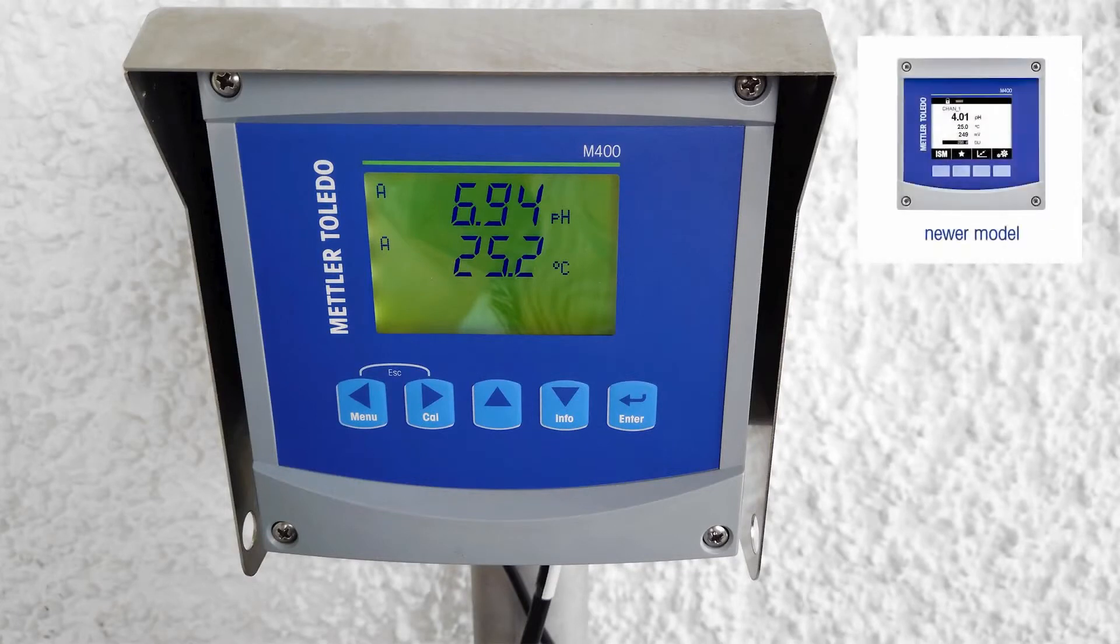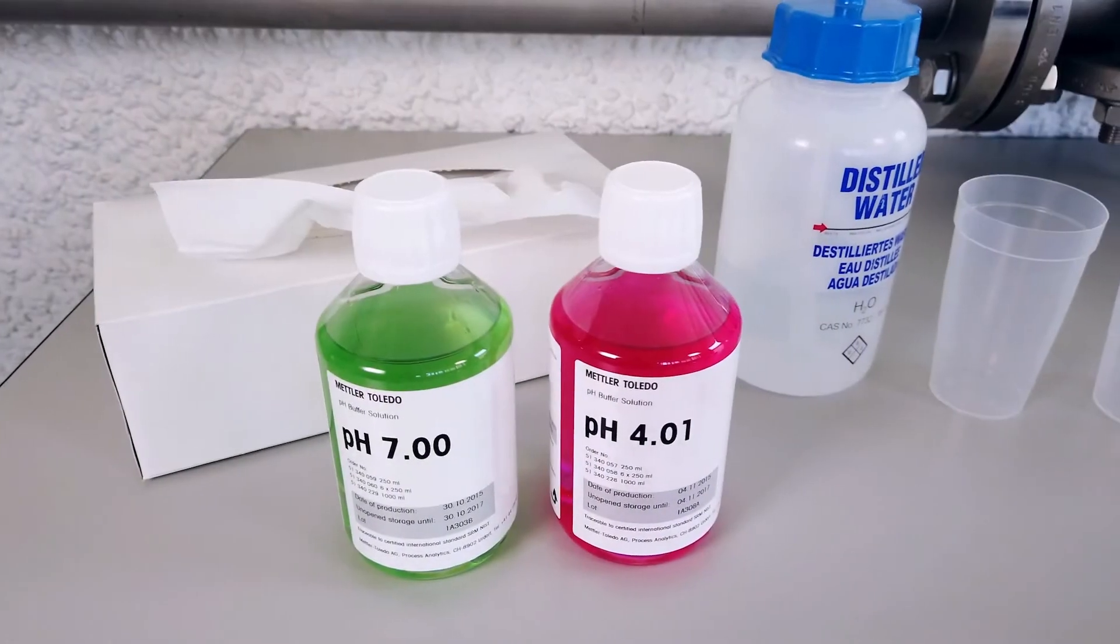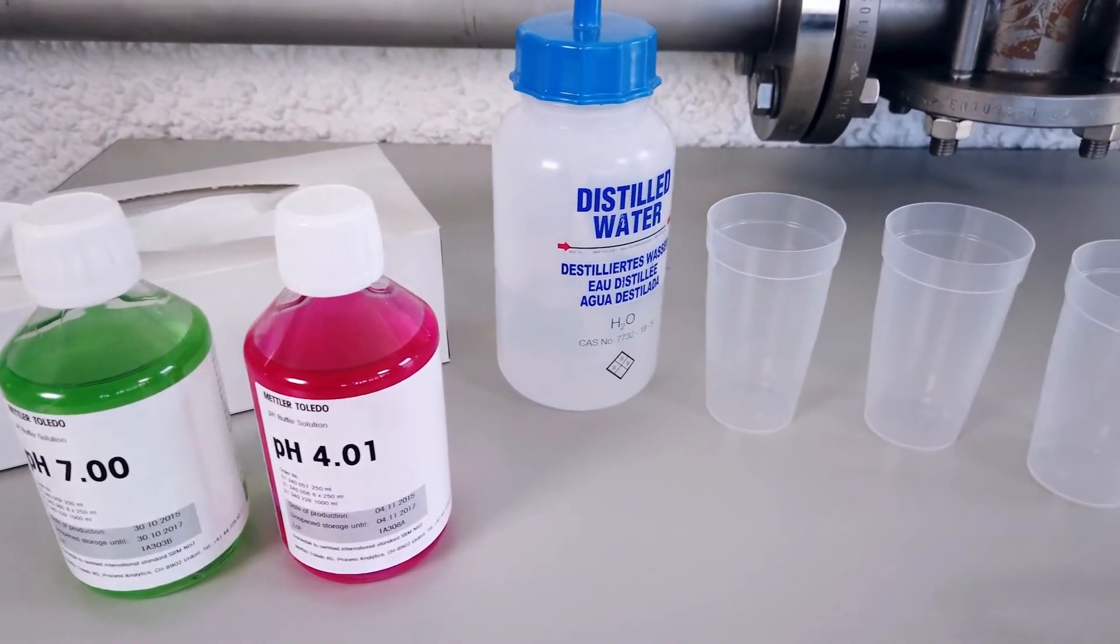If yours looks different, please find our calibration video on the next generation of M400. For a two-point calibration, use pH 4 and pH 7 buffers.